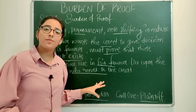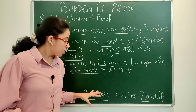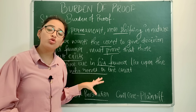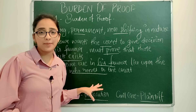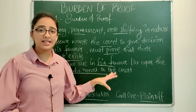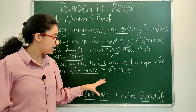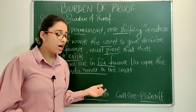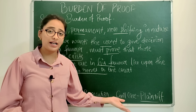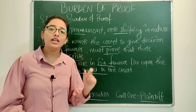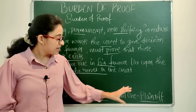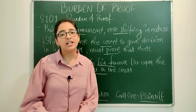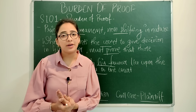In criminal cases, the prosecution has to prove its case beyond reasonable doubt — that the legal right exists in its favor. Similarly, the plaintiff has to prove it in civil cases.